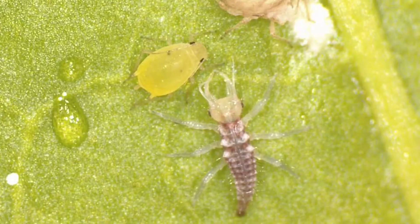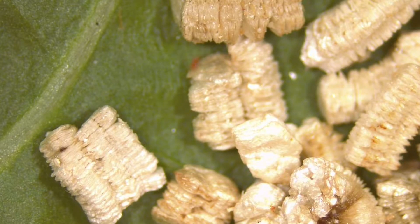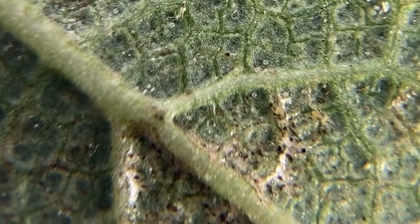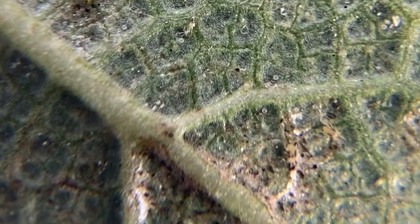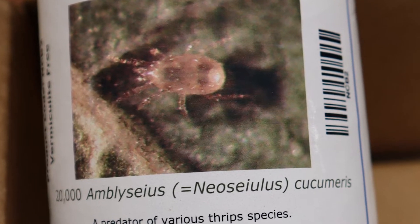Predators tend to be more generalist feeders and are less host-specific than parasitic wasps. There are many different species of predatory mites commercially available; they feed upon spider mites and/or thrips. One example is Cucumeris, used to manage western flower thrips.